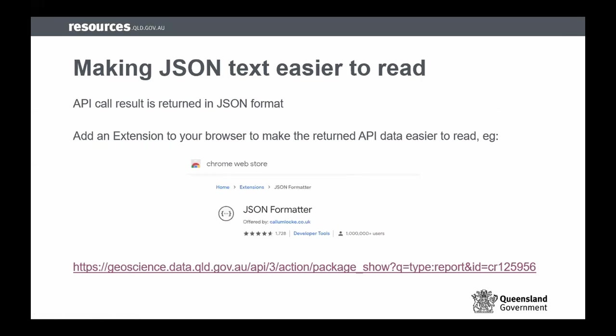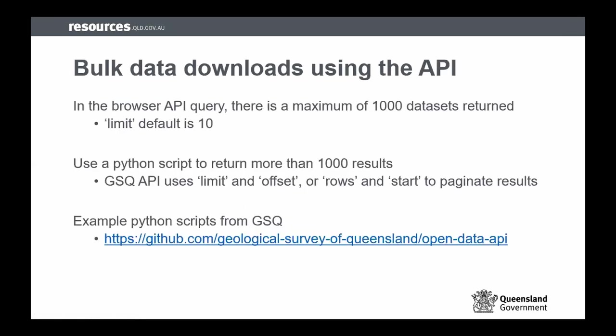With the API you can also do bulk downloads. In the same way you can with the open data portal — click through, apply filters, and end up with a set of reports or datasets you're interested in — you can do the exact same thing with the API. We have some example Python scripts on our open data API GitHub site that are ready to go and they work. If you have a list of reports or datasets you're after, you can use this script to download them all in bulk at once.